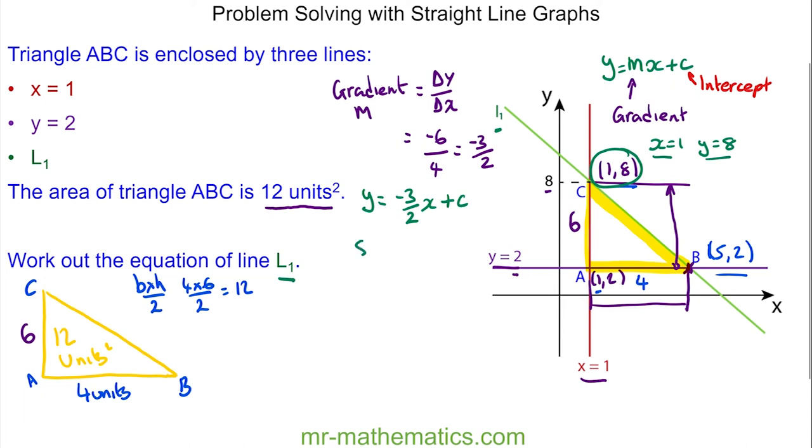So 8, which is y, equals negative 3 over 2 times x, which is 1, plus c. To work out the intercept c I'm going to convert this to a decimal. So 8 equals negative 1.5 plus c. I'll add 1.5 to both sides and these will cancel. So 9.5 equals c, and I'll write this as a fraction which is 19 over 2.